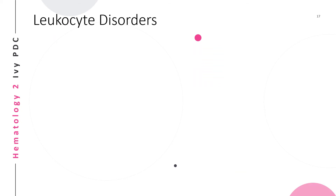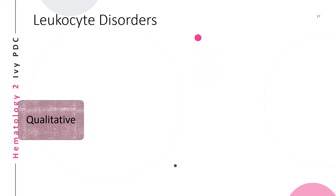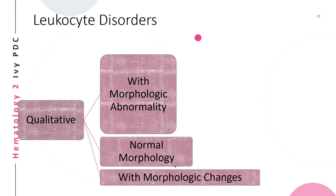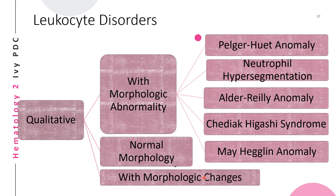The next leukocyte disorder category is qualitative disorders, divided into three characteristics: leukocyte disorders with morphologic abnormality, those with normal morphology, and those with morphologic changes. Examples with morphologic abnormality include: Pelger-Huët anomaly, neutrophil hypersegmentation, Alder-Reilly anomaly, Chédiak-Higashi syndrome, and May-Hegglin anomaly.